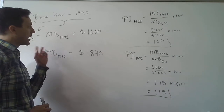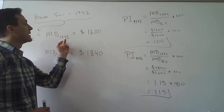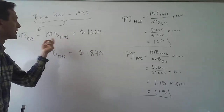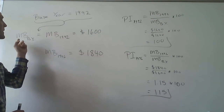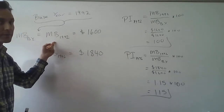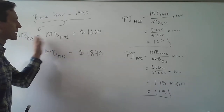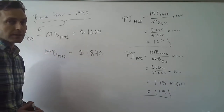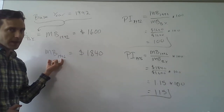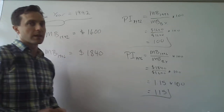Let's say that the value of the market basket happens to be $1,600 in 1992. Since 1992 is the base year, we know that the market basket in the base year is going to be equal to the value of the market basket in 1992, so that's $1,600. Let's also suppose that the value of the market basket in 1996 is $1,840.